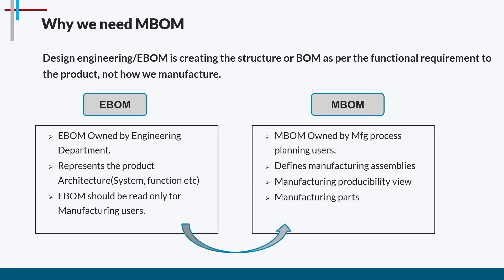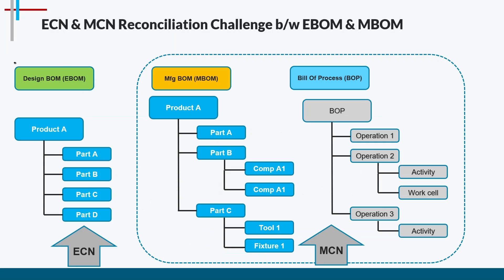The engineering bill of material is owned by the engineering department and represents the complete product architecture, system functions, etc. The eBOM should be read-only for manufacturing users, as it contains design data owned by engineering. The mBOM is owned by the manufacturing process planning users; it defines manufacturing assemblies and manufacturability views. Manufacturing engineers should not modify the engineering bill of material data.